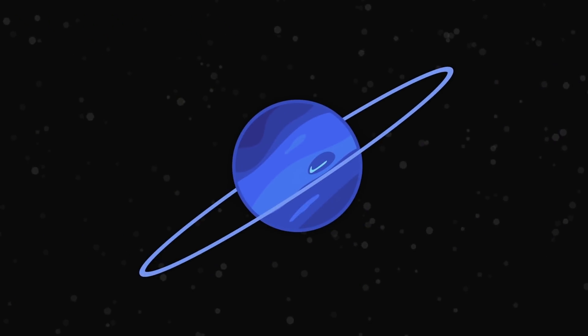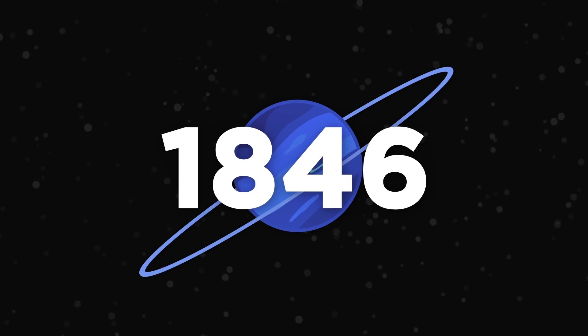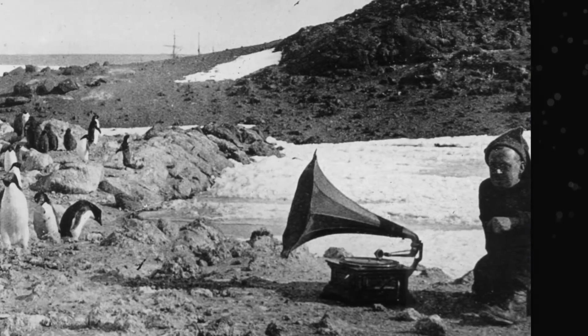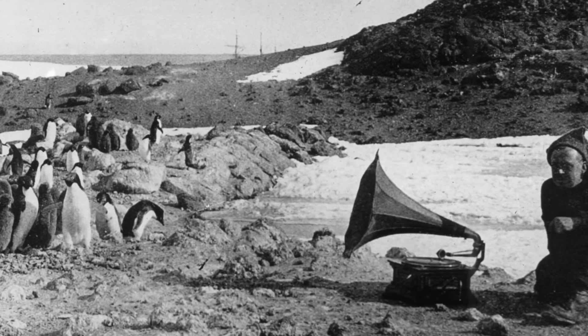Neptune was predicted to exist before it was actually discovered using similar mathematical models back in 1846. Which means that yes, Neptune was actually discovered by humans before Antarctica was.